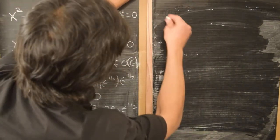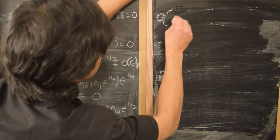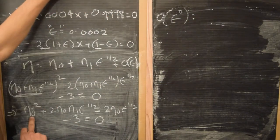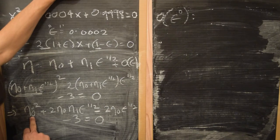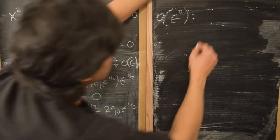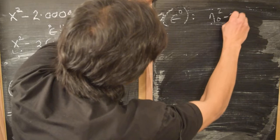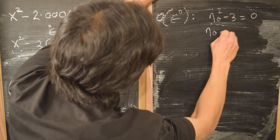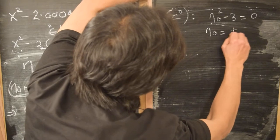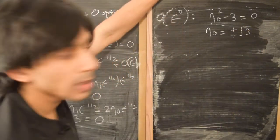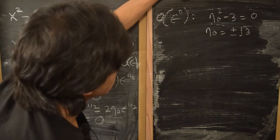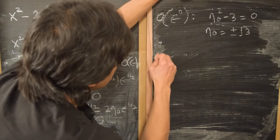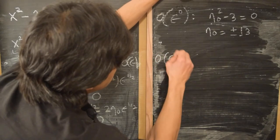At order ε⁰: η₀² − 3 = 0, which gives us η₀ = ±√3. So this gives us two roots — that is our ε⁰ solution. Then what about at order ε^(1/2)?